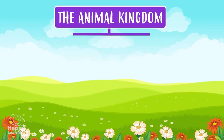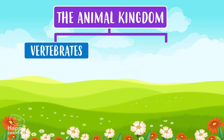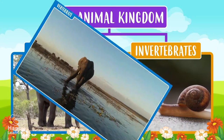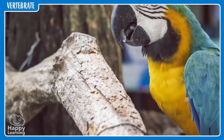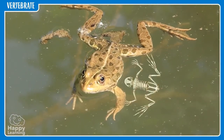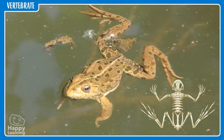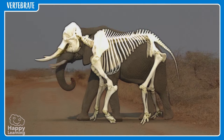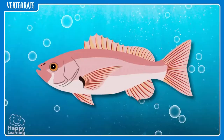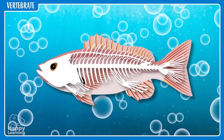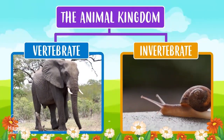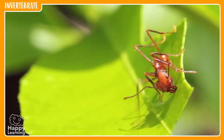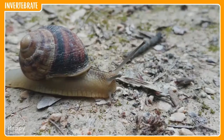The animal kingdom is divided into two main groups: vertebrates and invertebrates. Vertebrate animals, like this elephant, this parrot, or this little frog, have a skeleton — they have bones. This is the skeleton of an elephant, this is the skeleton of a frog, and this is the skeleton of a fish. Invertebrate animals, however, have no bones — they don't have an internal skeleton, like this ant or this slow snail.